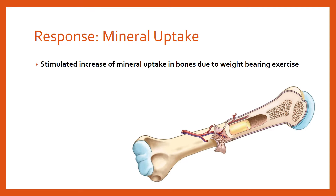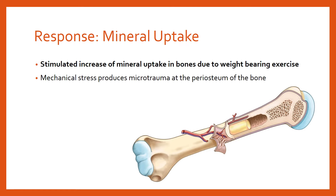When we exercise, mechanical stress — whether torsion stress, twisting stress, or impact stress — causes damage to the periosteum, that hard outer layer of the bone. This damage occurs only at a very microscopic level, which is what we call micro trauma. Because of those micro traumas, we get an increased amount of mineral uptake in response, and this really only happens during exercise.